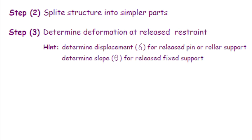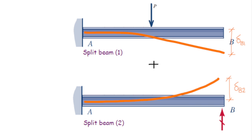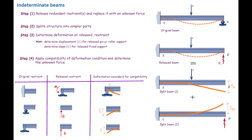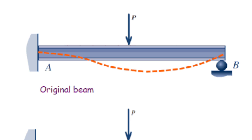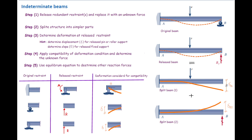Step three: determine deformations at the point where we released our structure — in this case, at the very right end. I determine delta 1 for the first beam and delta 2 for the same point in the second beam, using any method I know, such as values from the table. Step four, which is the core of this problem: write down the compatibility of deformations. Since there is a roller support, the total deformation at that point must equal zero. Applying the compatibility condition, I can determine the reaction force, and then find remaining reaction forces using equilibrium equations.